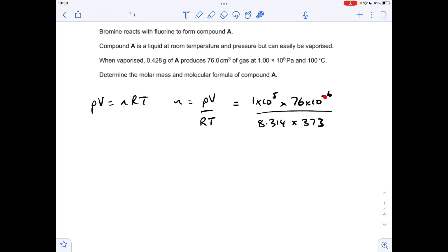So all I do is put it times 10 to the minus 6 after the centimetres cubed value, divided by R the gas constant, multiplied by the temperature which has to be in Kelvin. So we need to add 273 on to 100. So we're getting 0.00245 moles of A.